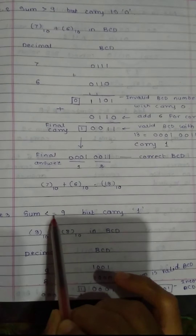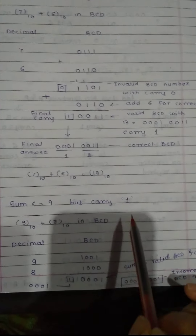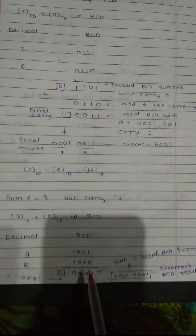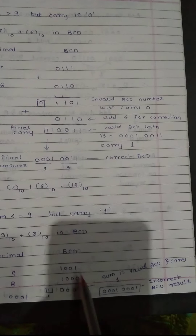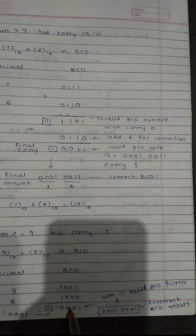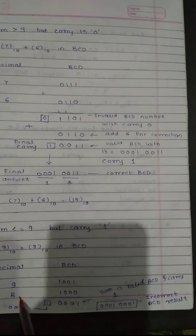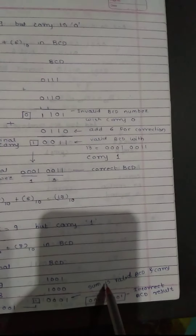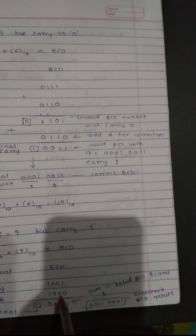Third situation: sum less than or equal to 9 but carry is 1. Example: 9 plus 8. In BCD, 9 is represented as 1001 and 8 as 1000. Binary addition: 1 plus 0 is 1, 0 plus 0 is 0, 0 plus 0 is 0, 1 plus 1 is 0 carry 1. The result is 10001 with a carry of 1. This is a valid BCD digit value but the answer is incorrect BCD.